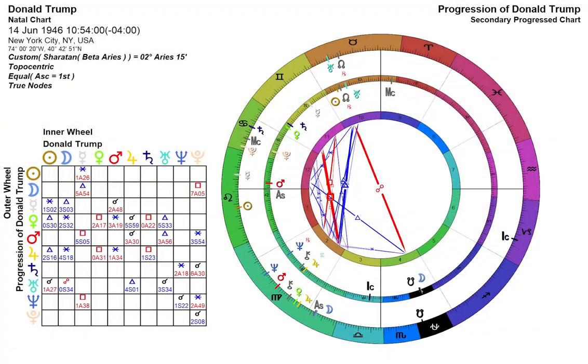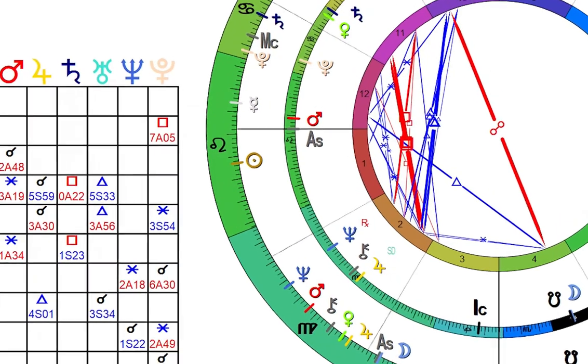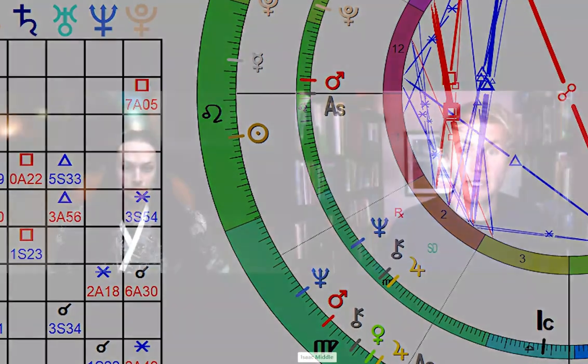Looking forward to Trump's progressions for the current eclipse, you can see the Sun has moved on past his ascendant — now about eight degrees past it, because it's been eight years since he was elected to power. Hopefully that explains progressions fairly well. Now let's look at transits — mapping the current position of the planets on the zodiac compared to where they were at his time of birth.